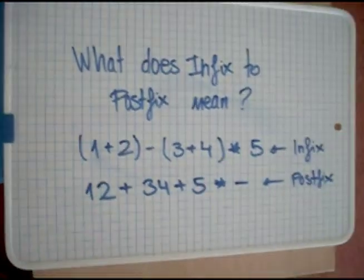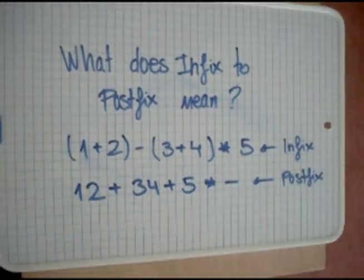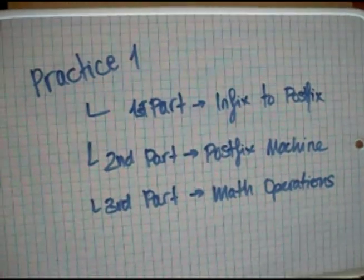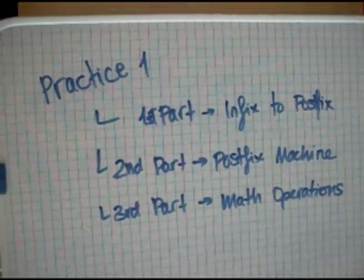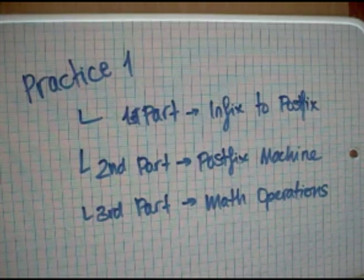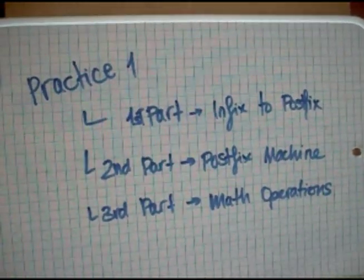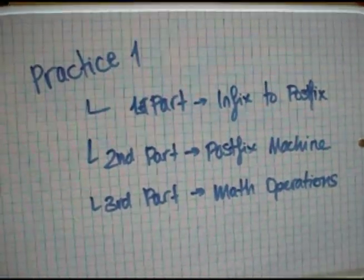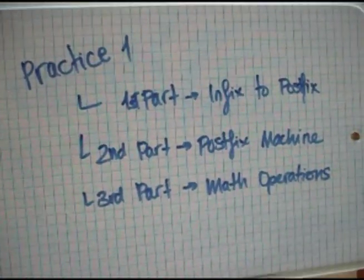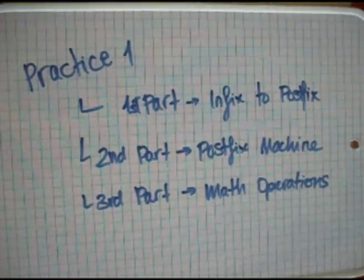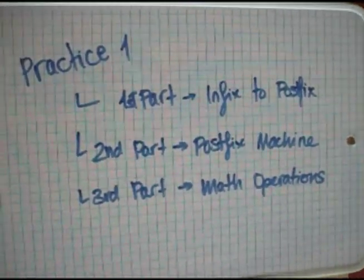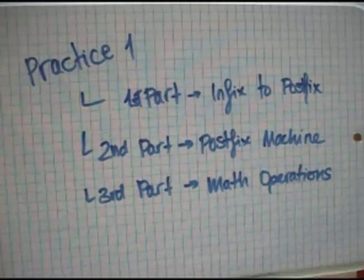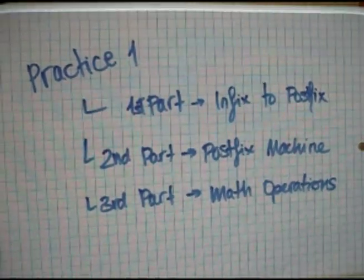After that, it will give us an answer. Our practice is divided in three different parts. The first part is about how to translate from infix, our language, to postfix, the language of our calculator. With this postfix language, the calculator will create a queue that will be used by the postfix machine to give us a solution. The solution will be made by the math operators and we are going to explain how each part works.